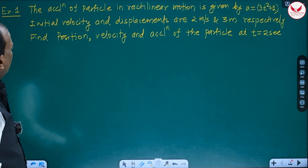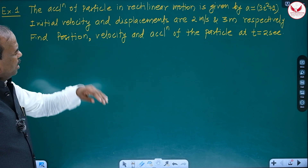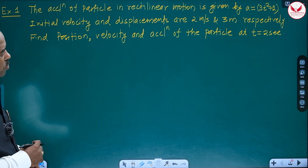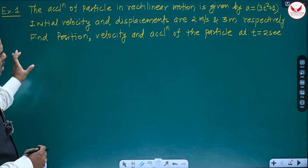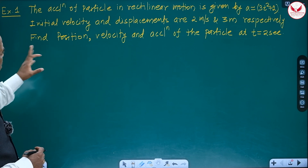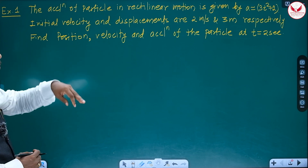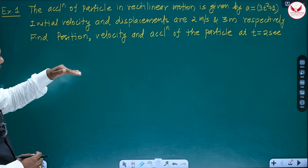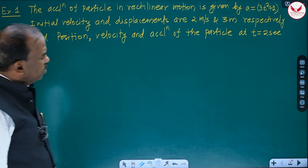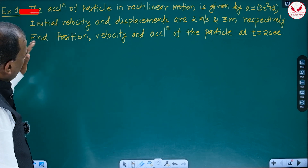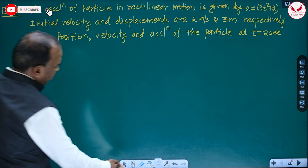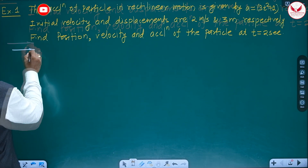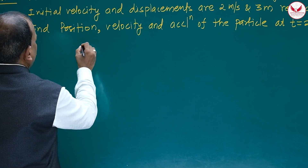First example: the acceleration of a particle in rectilinear motion is given by a = 3t² + 2. Initial velocity and displacement are 2 and 3 meters respectively. Find the position, velocity, and acceleration of the particle at t = 2 seconds.